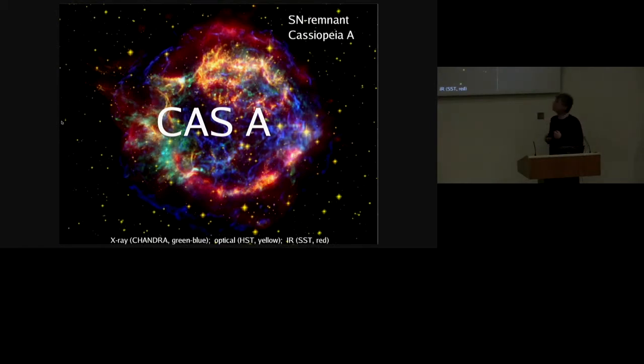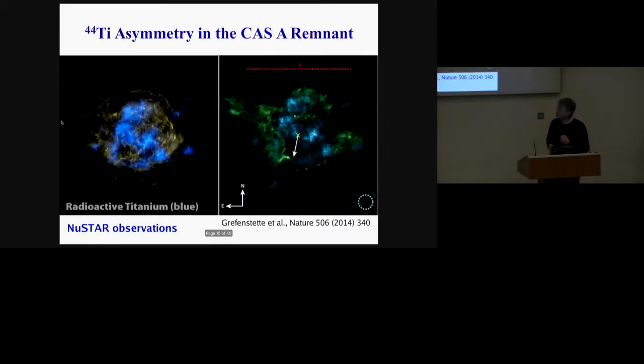Let us now come to Cassiopeia, which was already discussed in quite some detail by Dan. This was a fantastic result by the Gravenstätte group in Nature 2014, where they showed the iron, the titanium distribution directly measured, and they actually compared this to the kick direction of the neutron star. This is the highly enriched titanium clumps, and you can see here the neutron star kick is in the opposite hemisphere.